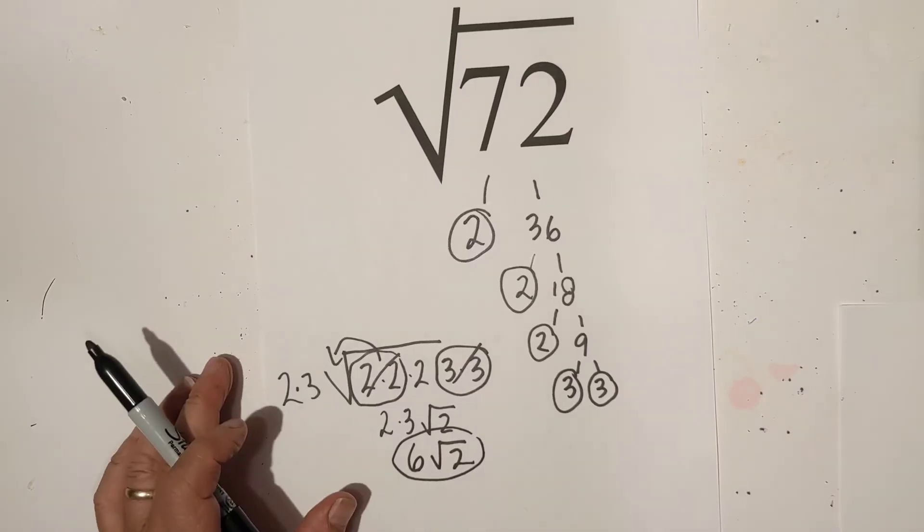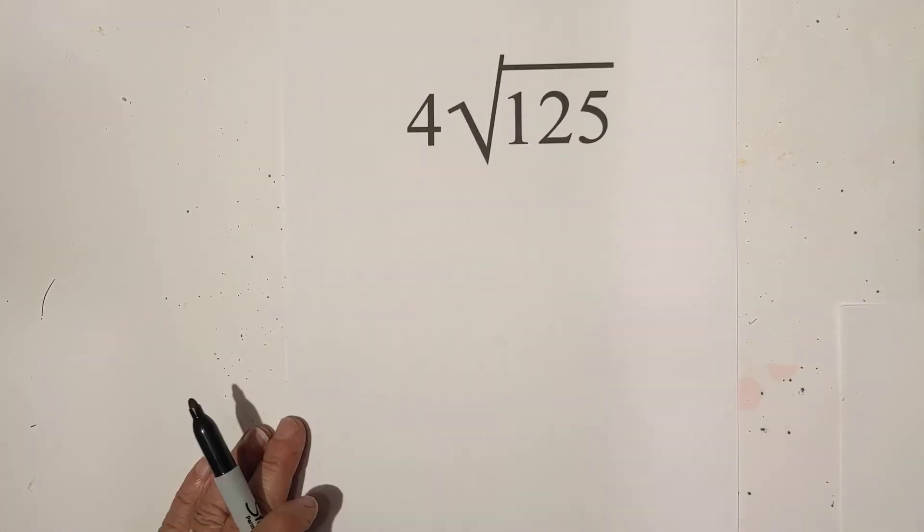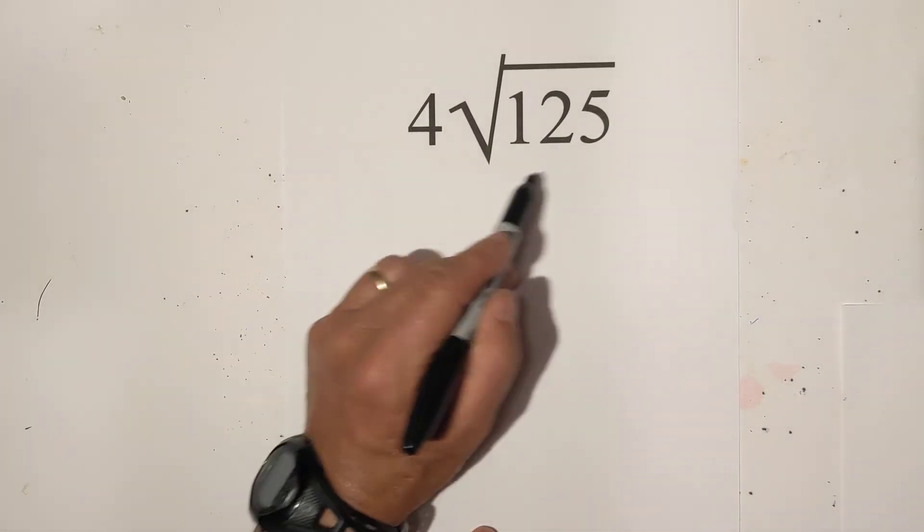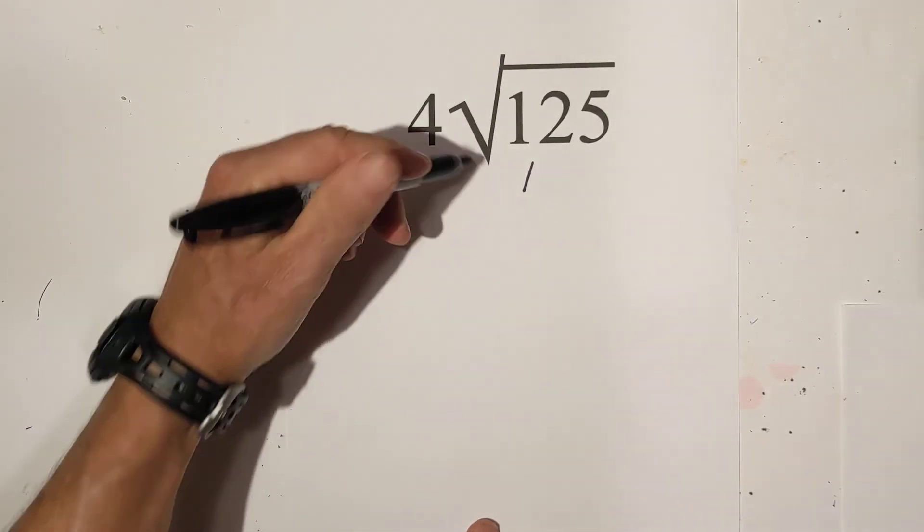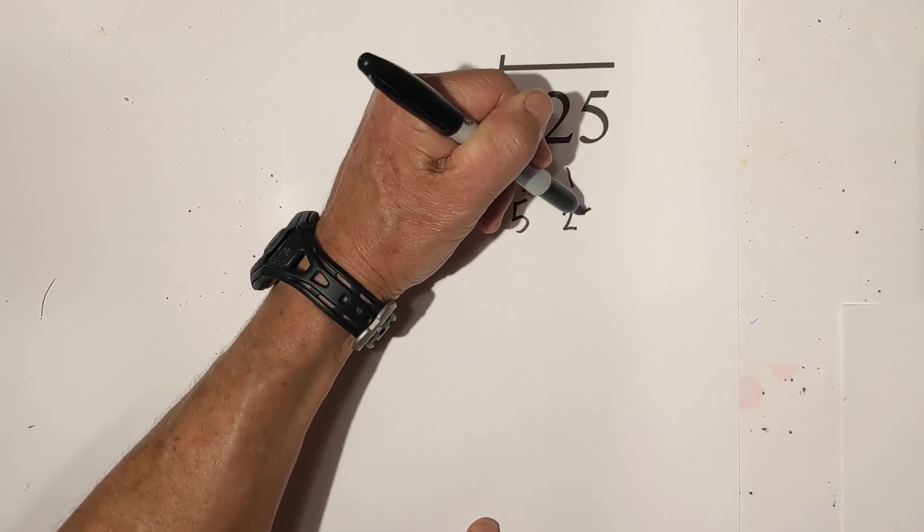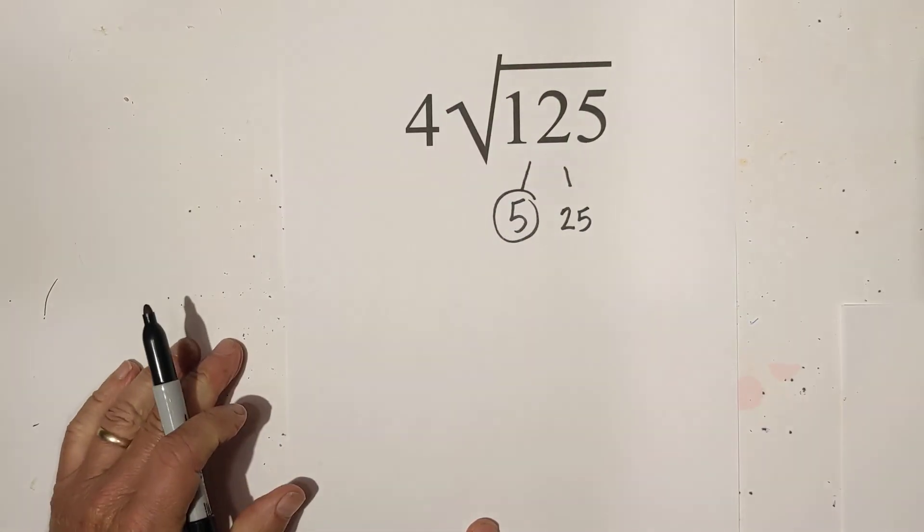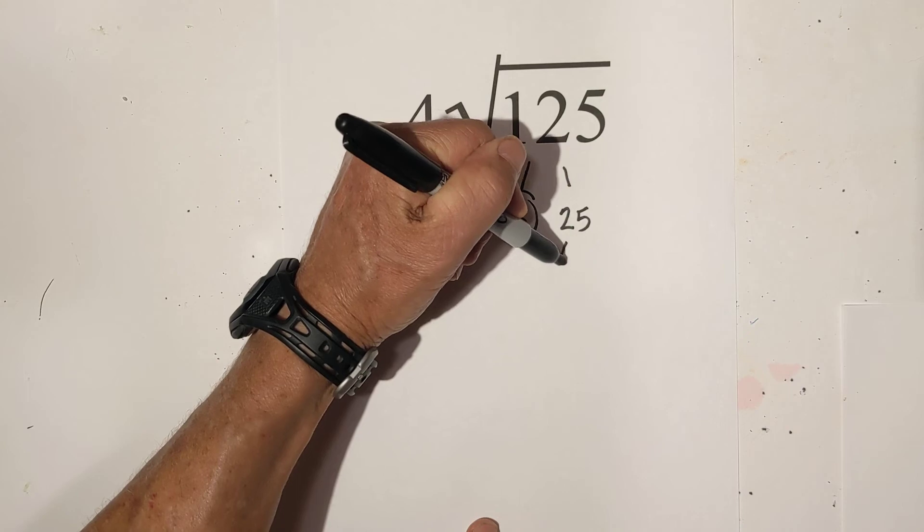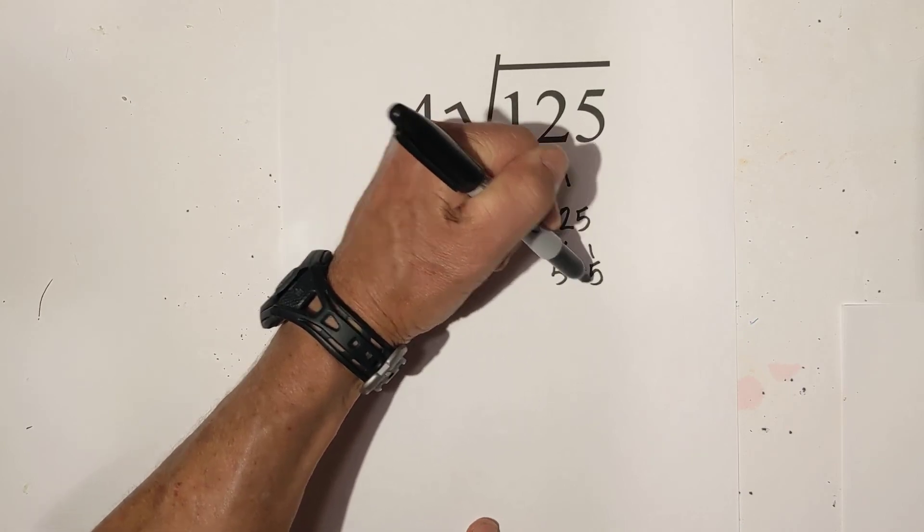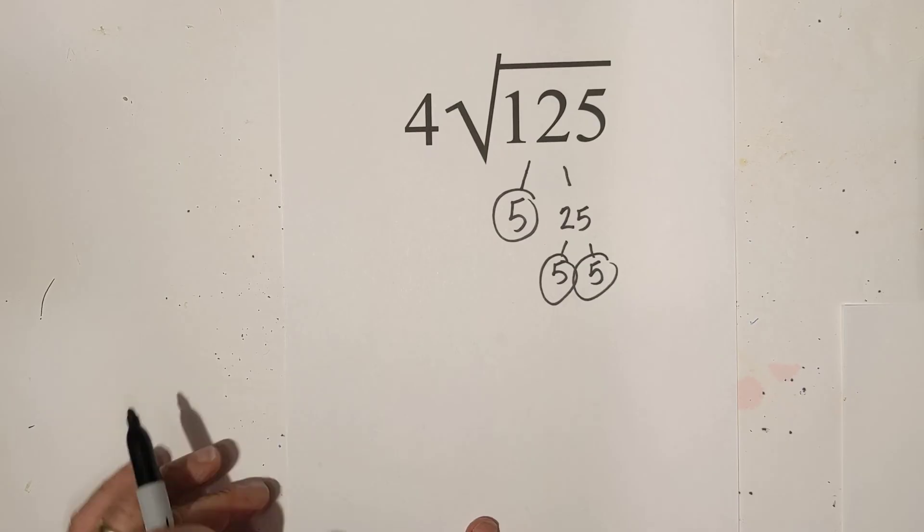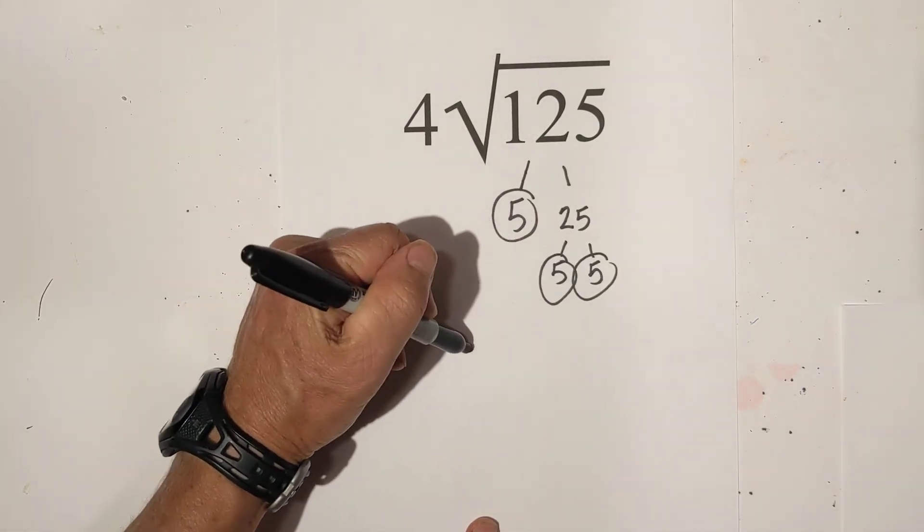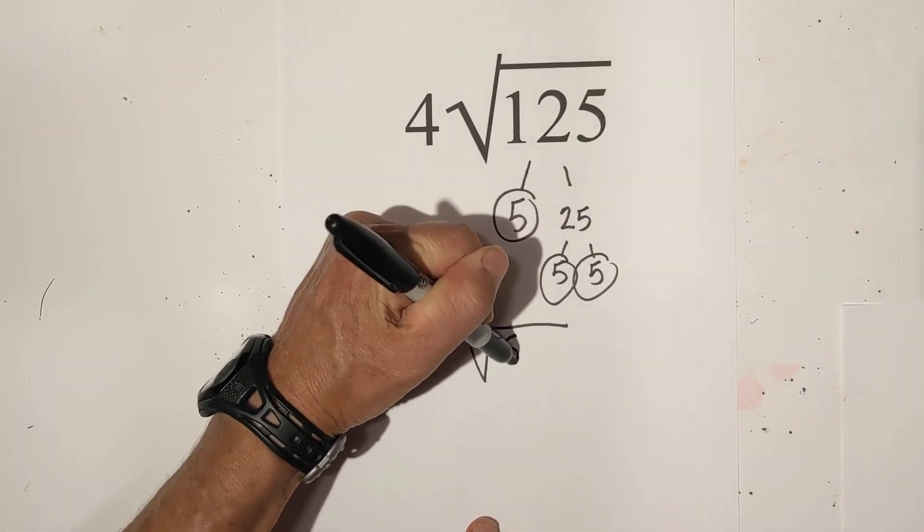One final one. What do we do with something like this? Well, we're going to begin with a factor tree. Five times twenty five is a hundred and twenty five. And then five times five is twenty five. So now we're down to prime numbers. So let's rewrite it.